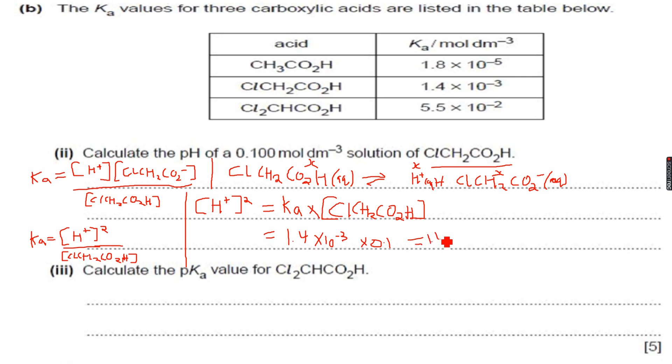1.4 into 10 to the power of minus 4. Then I can calculate the concentration of H plus, which is the square root of 1.4 into 10 to the power of minus 4. So then when I get this...